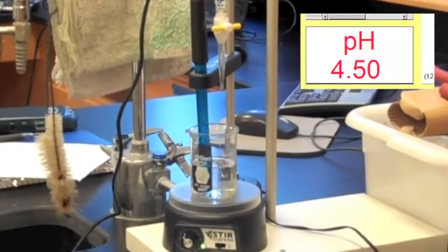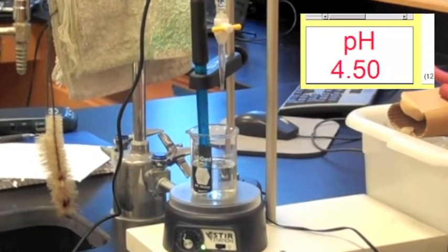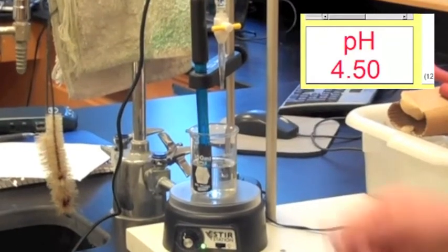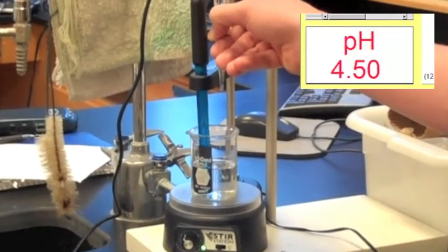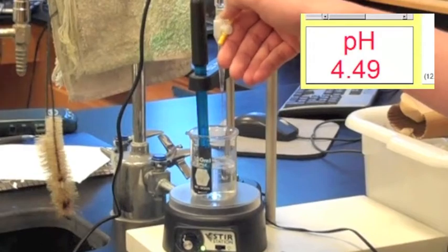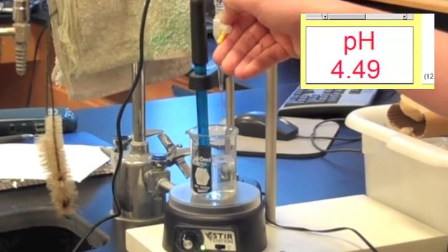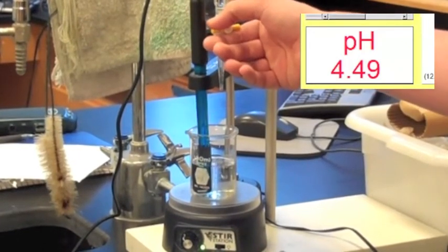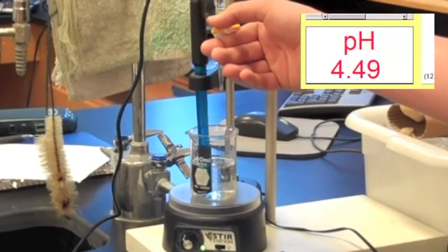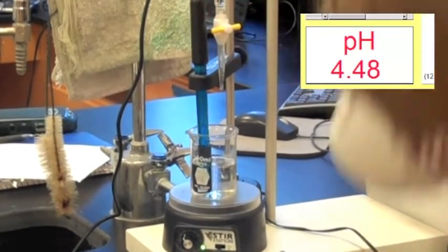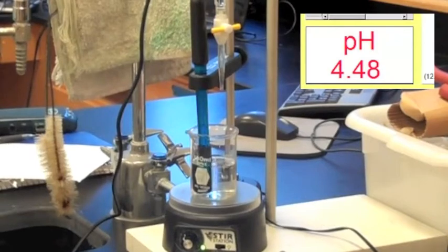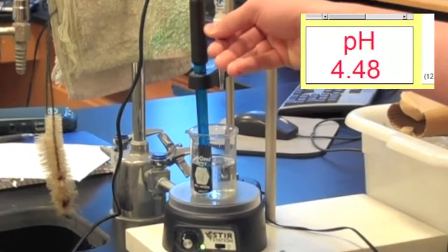Now I'll add another 10 milliliters or so. The pH has dropped about 0.01, 0.02, but the acid hasn't really had any great effect.